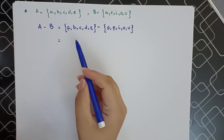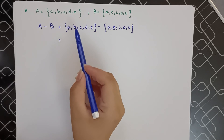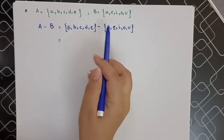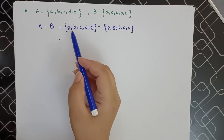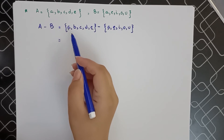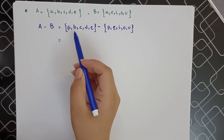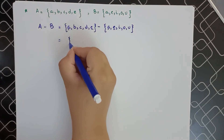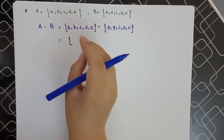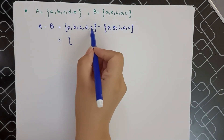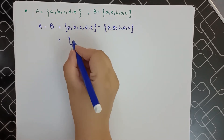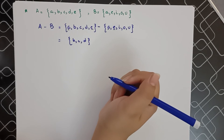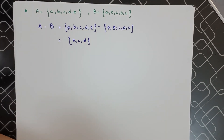Since the common elements are A and E in both sets, A minus B means we write those elements remaining in A after removing those found in B. After taking out A and E, which come from B, we are left with B, C, and D. So A minus B equals {B, C, D}.